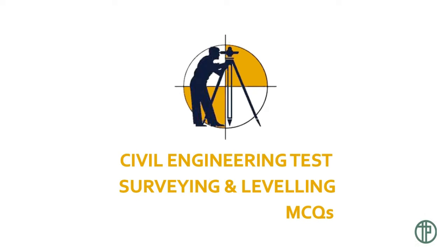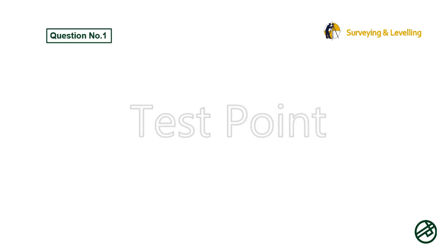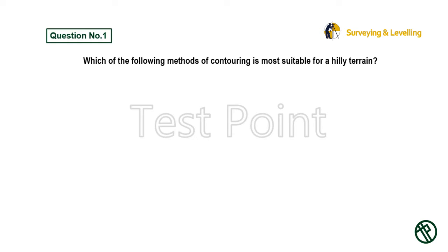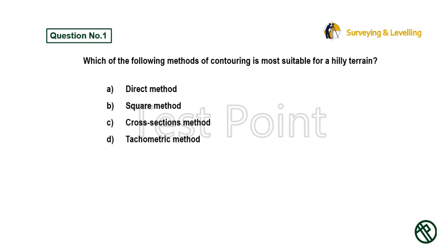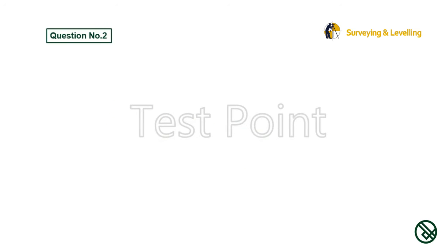Civil Engineering test: Surveying and Leveling MCQs Part 2. Question 1: Which of the following methods of contouring is most suitable for a hilly terrain? Option A: Direct method. Option B: Square method. Option C: Cross sections method. Option D: Tachymetric method. Answer is Option D: Tachymetric method.